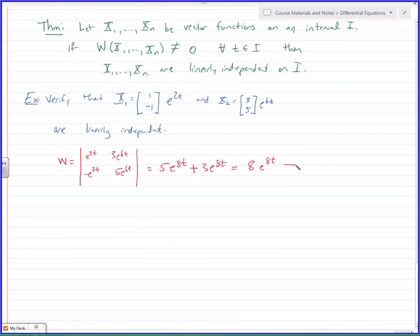So, what can you tell me about this? Never 0, right? For all t, in fact, for all t in the reals. Which means that x1 and x2 are independent on negative infinity to positive infinity. Because this thing could never be 0. 8's never 0, e to the 8t's never 0, so the product is never 0.